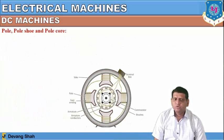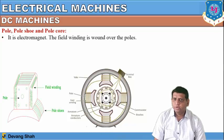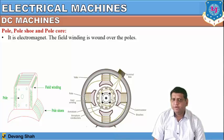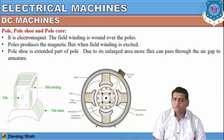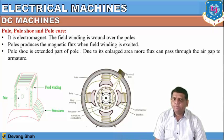The next parts are the pole, pole shoe, and pole core. The pole is an electromagnet; the field winding is wound over the pole, and this winding is defined as the field winding. The pole shoe is the extended part of the pole — due to its enlarged area, more flux can pass through the air gap to the armature. The poles produce magnetic flux when the field winding is excited. These parts are made up of cast iron and silicon steel.